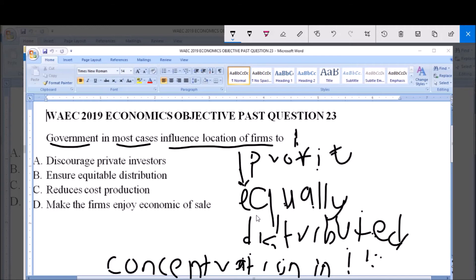So to ensure that they are equally distributed is basically what is stated in option B, which is ensure equitable distribution. So option B is our answer to the question.